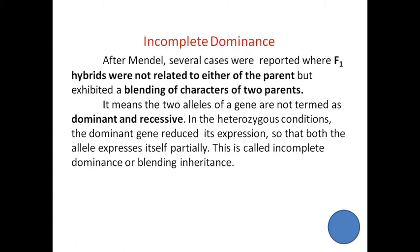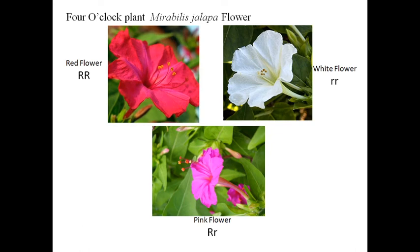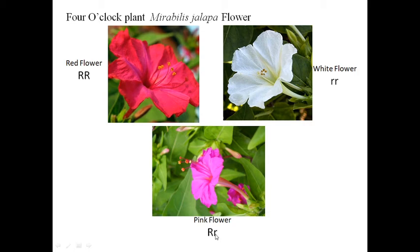In this figure we see three types of flowers of the four o'clock plant, whose botanical name is Mirabilis jalapa. One type has capital R, capital R — the so-called dominant — and is a red flower. Another type has small r, small r, and is a white flower. The third type is a pink flower, with capital R, small r — the heterozygous condition.